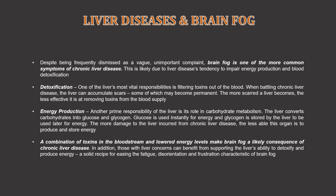Another prime responsibility of the liver is its role in carbohydrate metabolism. The liver converts carbohydrates into glucose and glycogen — glucose is used instantly for energy and glycogen is stored by the liver to be used later. The more damage the liver incurs from chronic liver disease, the less able this organ is to produce and store energy. A combination of toxins in the bloodstream and lowered energy levels makes brain fog a likely consequence of chronic liver disease.